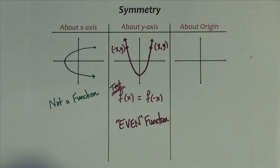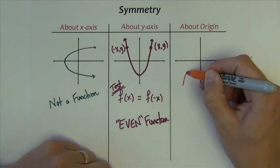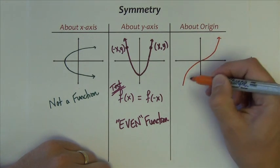The other type of symmetry that we sometimes see is symmetry about the origin. Symmetry about the origin would look kind of like this.